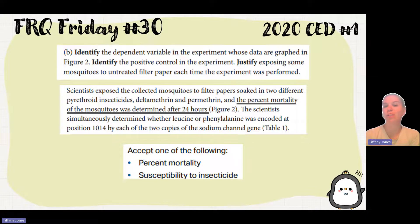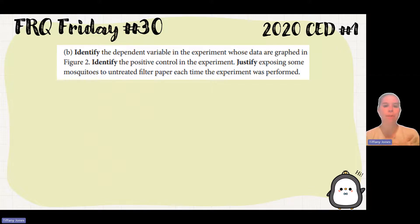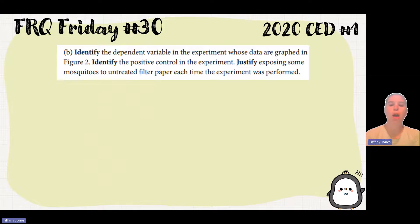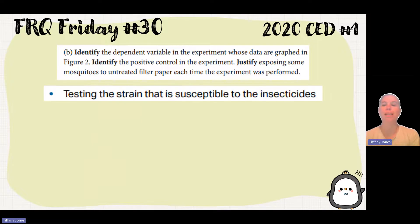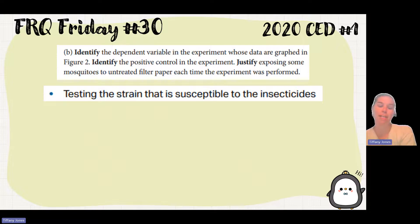What about identifying the positive control in the experiment? A positive control is something we know is going to happen when we give it the treatment group. This would be the strain that's susceptible to the insecticide — we know that susceptible strain should die, so seeing that happen in the experiment is the positive control.